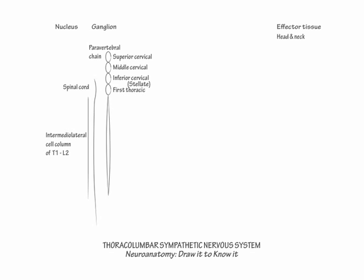In the spinal cord, further specify the ciliospinal center of Budge, which spans from C8 to T2 in the intermediolateral cell column. Show supraspinal input from the posterolateral hypothalamus descending onto the ciliospinal center of Budge.